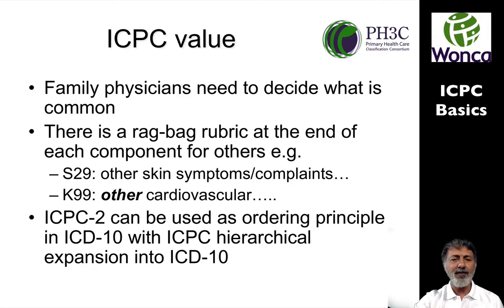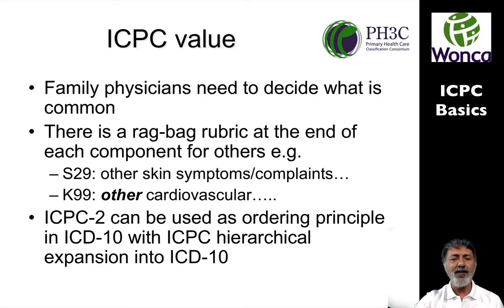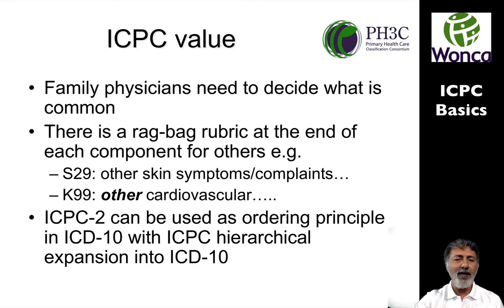These are the rag bags. At the end of each symptom set there is a 29 — for example, S29 would be any other skin complaint or skin symptom. At the end of the diagnostic is 99 — so it would be any other disease label. K99 would be anything cardiovascular. In each of these chapters you'll find a 99 or a 29 that allows you to include anything potentially.